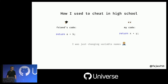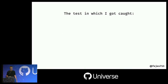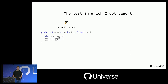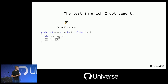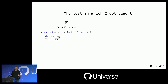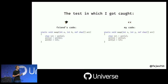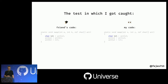That worked for two or three months until we were given an array manipulation exercise — a sorting exercise where you swap two elements using a third variable called 'temporary', shorthand in English to TMP. But my friend wasn't good at English, so he just used the variable name TRT. I copied the same code, exchanged all the variable names, but forgot to change TRT. And that was the test where I got caught.